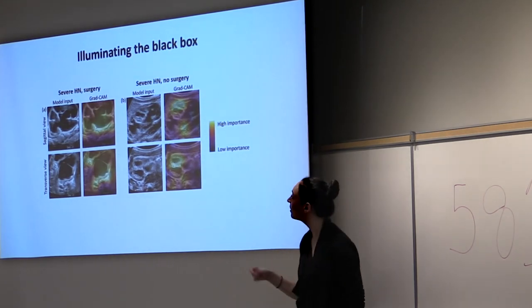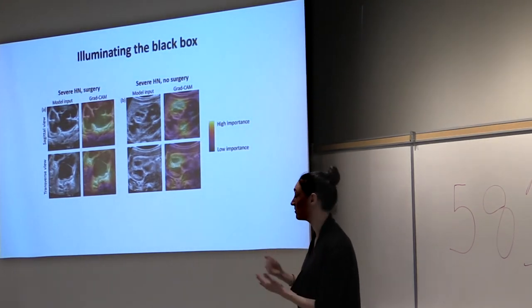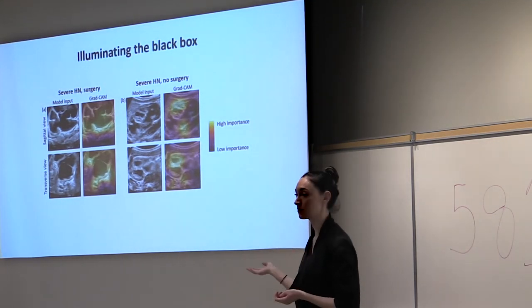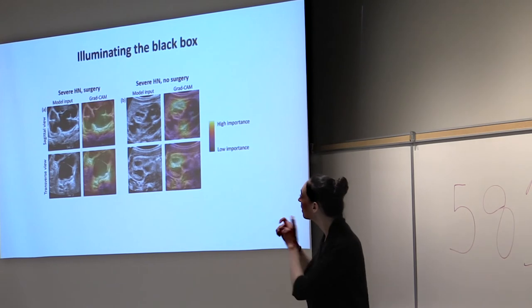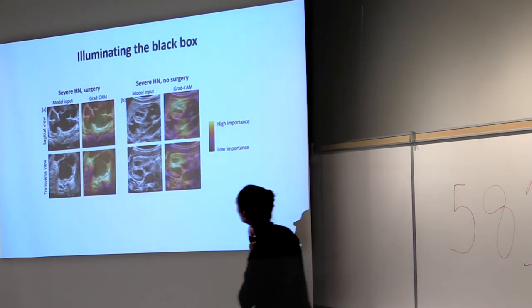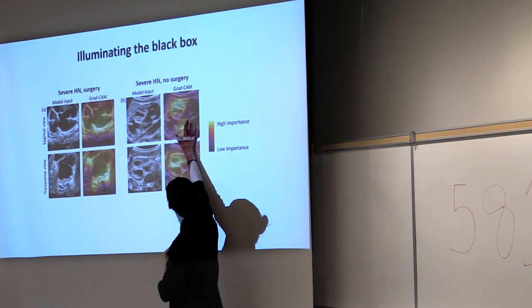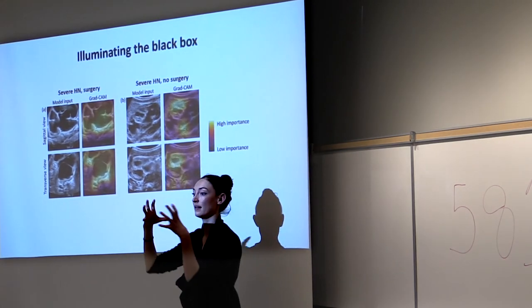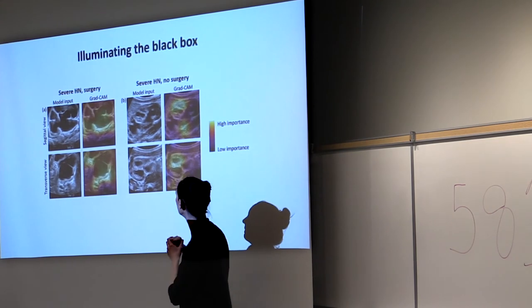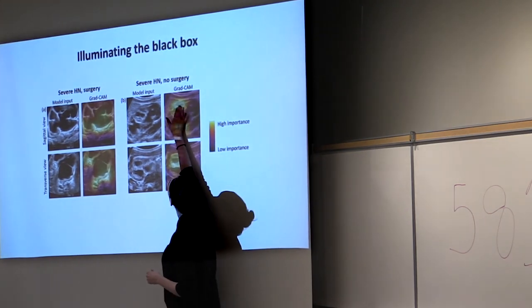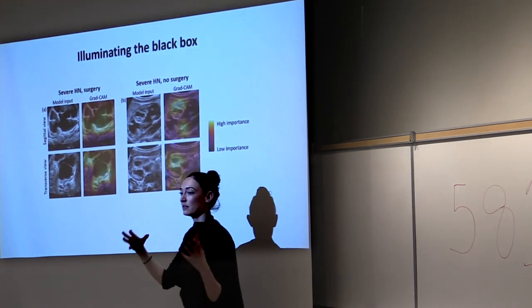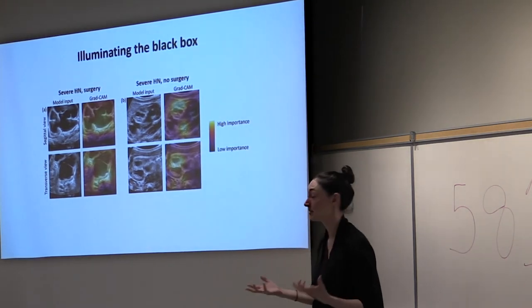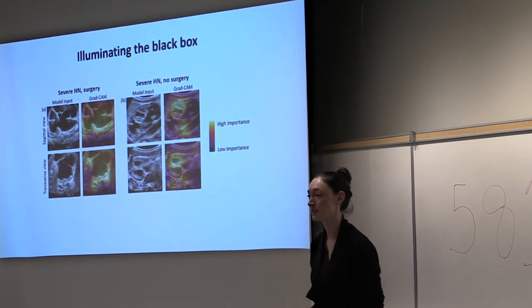But what's nice is you can also compare it to another severe hydronephrosis case, one that didn't get surgery. You can see where it's focusing on other areas that are very important for this. This is the ureter that it's actually highlighting, and it's showing that there's not a dilated ureter on top of the dilated kidney. So that's important. And then it's also highlighting the parenchyma that's still intact and the pyramid structures that are still intact in the kidney. So it's reasonable what it's highlighting relative to the predictions it's making.